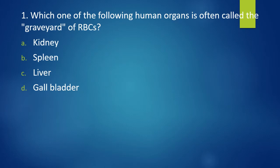Question 1. Which one of the following human organs is often called as graveyard of RBC? Kidney, spleen, liver, gallbladder. Graveyard of RBCs. Correct answer is option B, spleen.